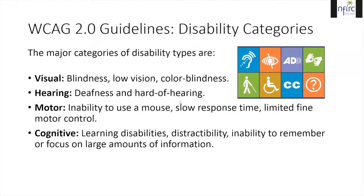For visual, we have blindness, low vision, and color blindness. For hearing, deafness and hard of hearing. For motor, we have inability to use a mouse, slow response time, and limited fine motor control. For cognitive, learning disabilities, distractibility, and inability to remember or focus on large amounts of information. Please see the provided links to the WebAIM page for each one of these categories included in the lesson.